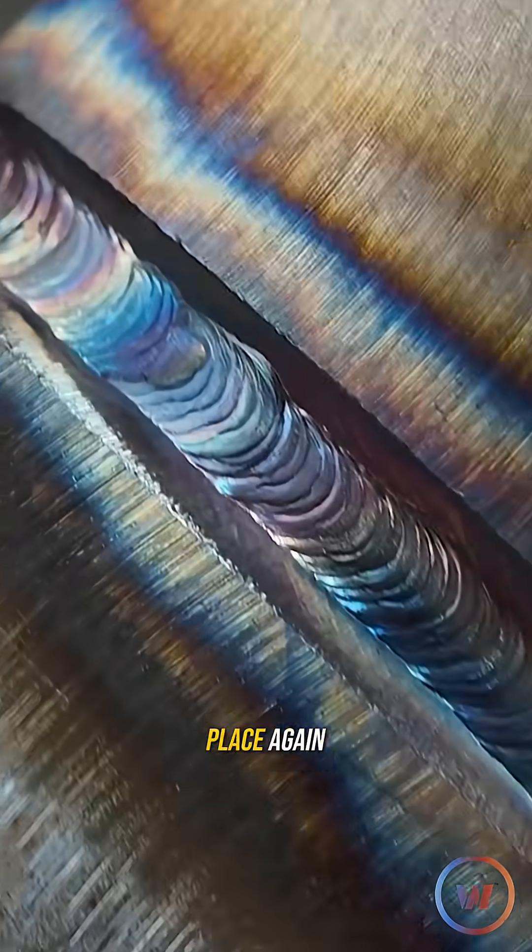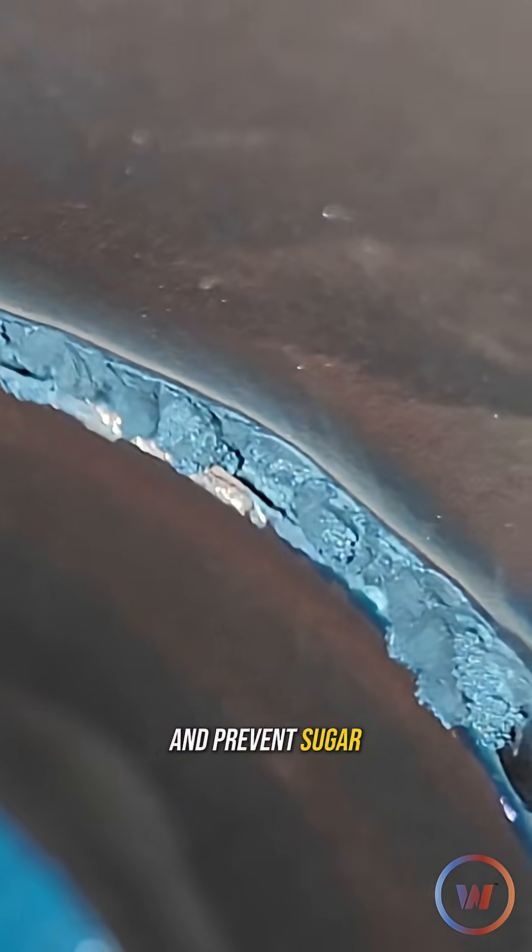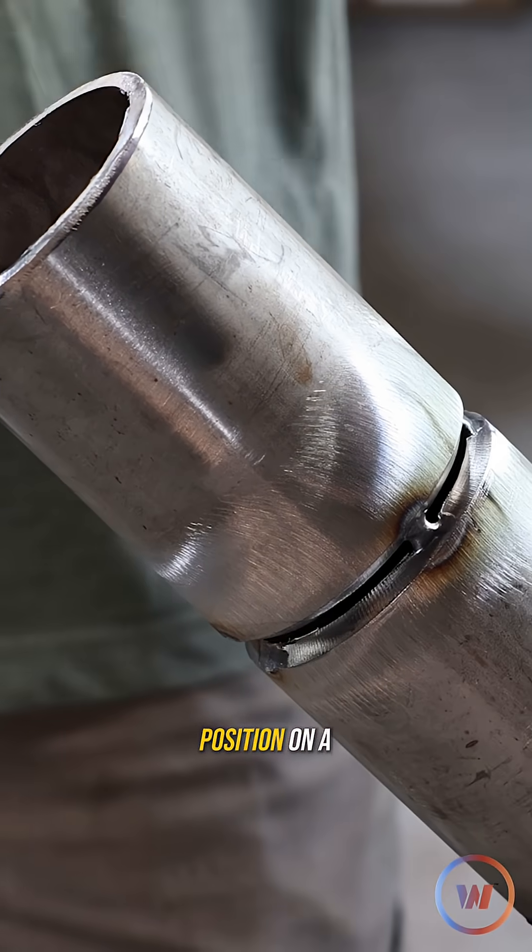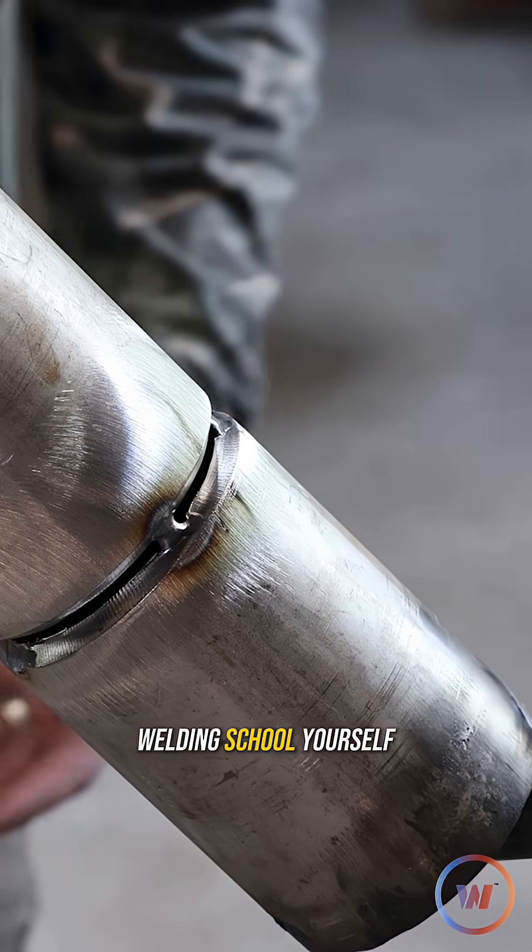The main reason we're purging in the first place is to keep the weld clean and prevent sugar. I've tacked it in the 6G position on a piece of tubing, just like you might be if you were in welding school yourself.